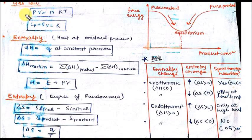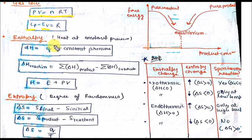These are some basic formulas of thermodynamics. The ideal gas law is PV equal to nRT. Heat capacity at constant pressure minus heat capacity at constant volume equals R. The formula of enthalpy — heat at constant pressure — is defined as internal energy plus P into change in volume.